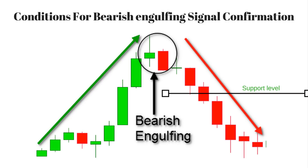Second condition: a small bullish candle followed by a larger bearish candle; that bearish candle should be a gap opening and its close should be below the previous day's bullish candle. Third condition: traders should wait for the market to break the nearest support level after bearish engulfing candle formation. If it breaks the nearest support level, then go for short.